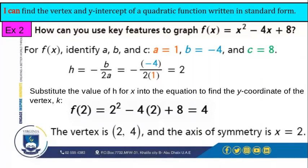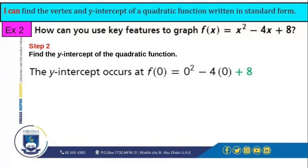Now, how do we find the y-intercept? The y-intercept is so easy to find. We will just substitute the value of the x letter by 0, or we could say, in other words, evaluate 0 on the x. Step 2: Find the y-intercept of the quadratic function. So the y-intercept occurs at f(0) = 0² - 4(0) + 8. So the y-intercept is (0, 8).